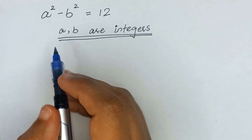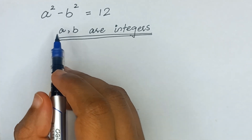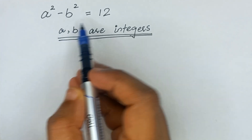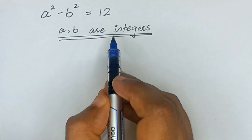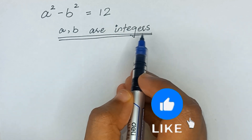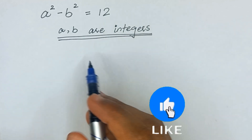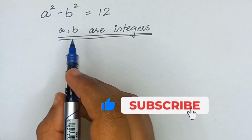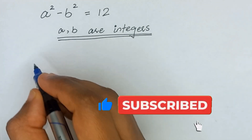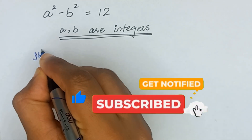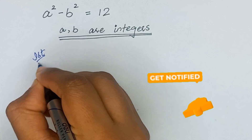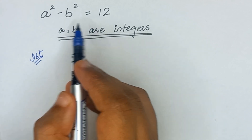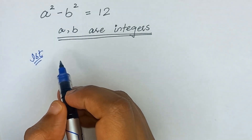Hello friends, today we will solve an equation which is a squared minus b squared is equal to 12, where a and b are integers. I will solve this question for a and b using two methods. In the first method, I will use the identity a squared minus b squared is equal to a plus b times a minus b.